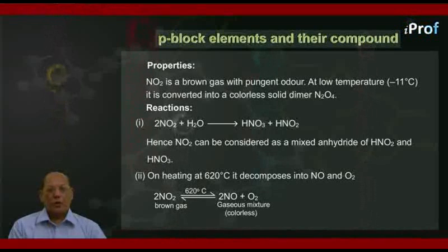Second, on heating at 620 degrees Celsius, it decomposes reversibly. Therefore, 2NO2 at 620 degrees Celsius decomposes reversibly into 2NO plus O2. This gaseous mixture is, of course, colorless.